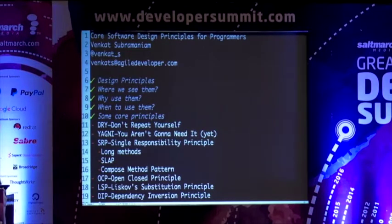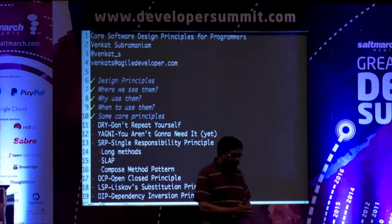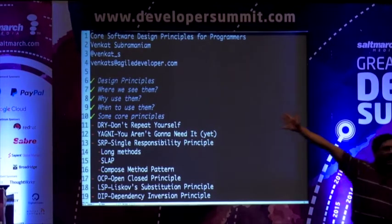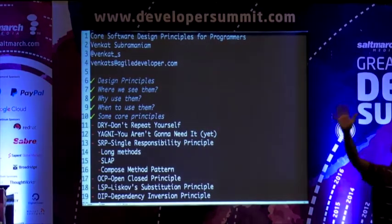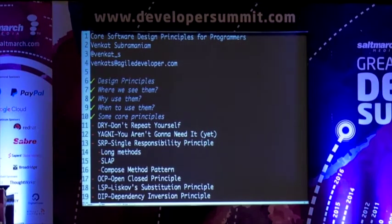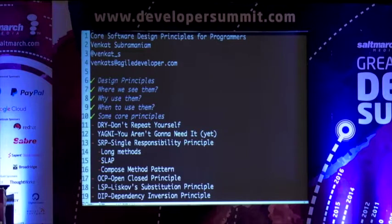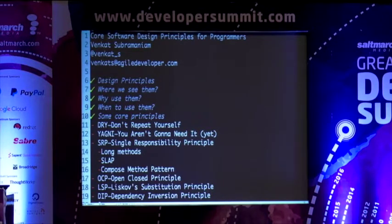Let's talk about some core design principles. How many of you write program code? How many of you design software? Everyone who writes code should raise their hand, because you cannot be writing code without designing. This idea that we design separately and then write code separately is just a myth. Everyone designs code. Even the person you say 'never designs' — if you watch them code, they'll look at the ceiling. That's called JID: just-in-time design. Code and design are very intricately connected.